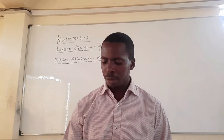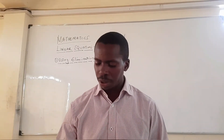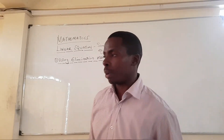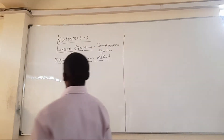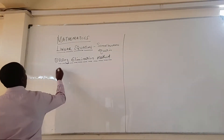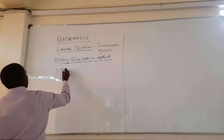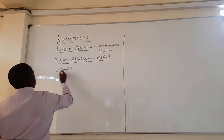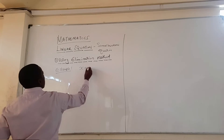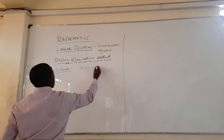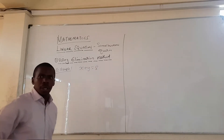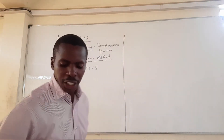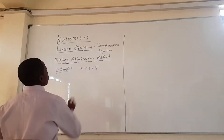My first example: x plus y equals 8, and x minus y equals 4. This is a simultaneous equation which needs to be solved — you need to find the values of x and y using the elimination method.